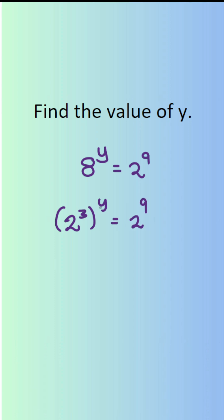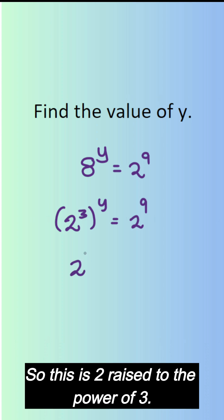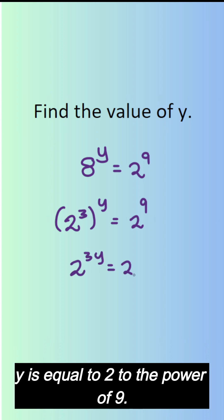Now when you have a power of a power, when you have a bracket you need to multiply those two. So this is 2 raised to the power of 3y is equal to 2 to the power of 9.